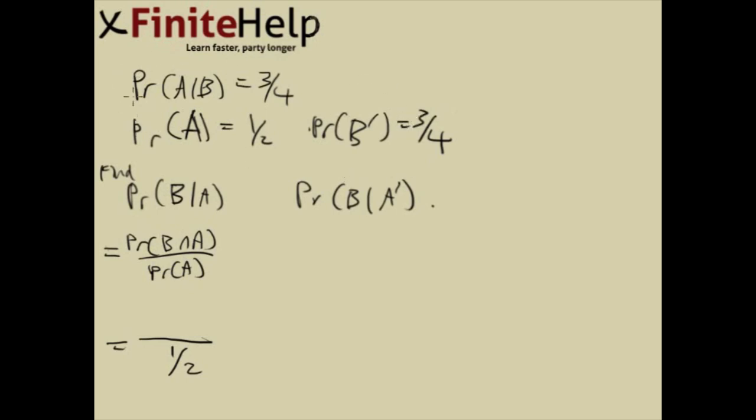One way it's useful to think about is that every piece that's given is usually used in the problem one way or another. So we already used A. How are we going to find B intersect A with these pieces?